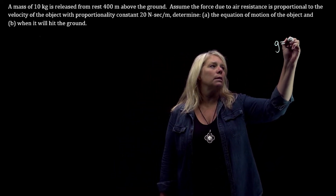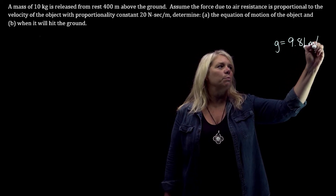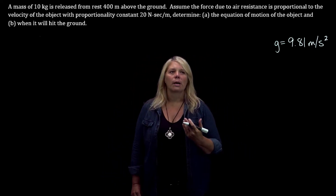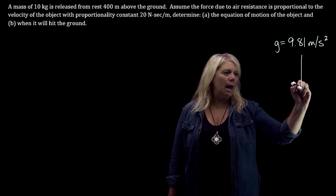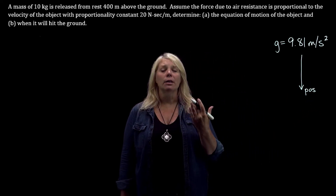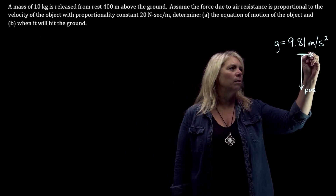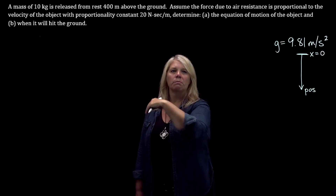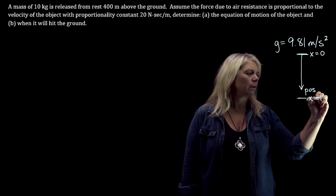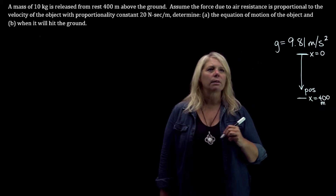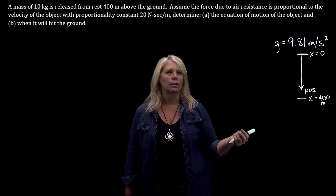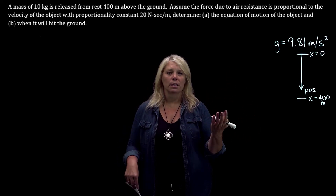We're going to use g equals 9.81 meters per second squared — that's what they do in your homework. We're also going to assume that the positive direction is down, and we're going to let the initial position of the object be at zero. So when it ends up at ground level, because it starts out 400 meters above the ground, it will end up at 400 meters. You could decide that zero is ground level and the positive direction is up, but this is what they do in the homework.